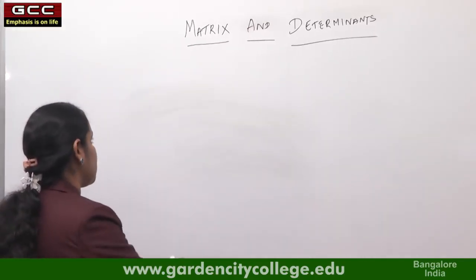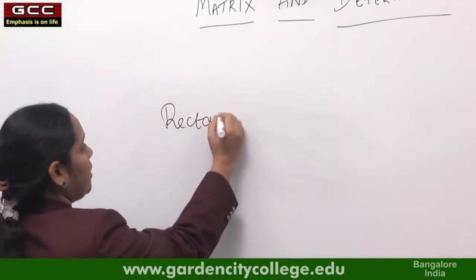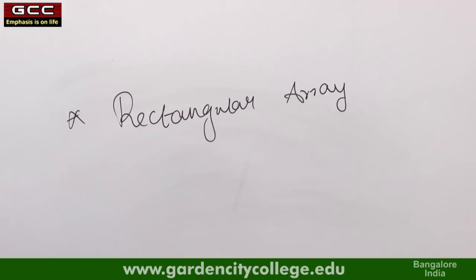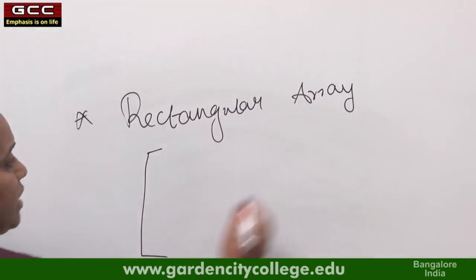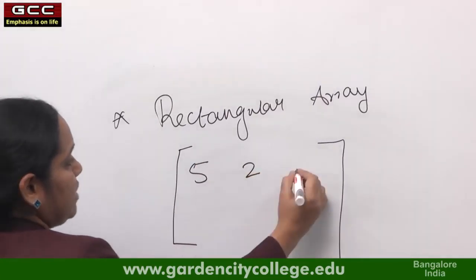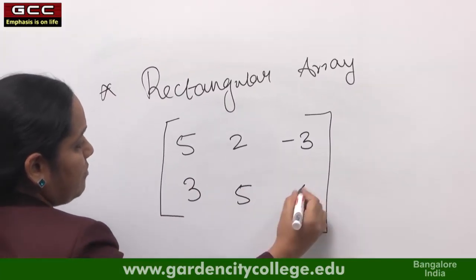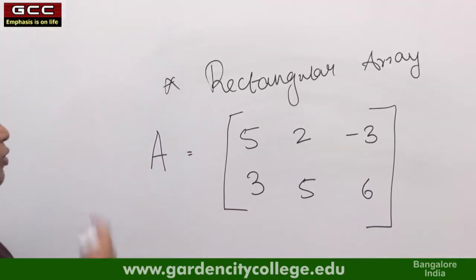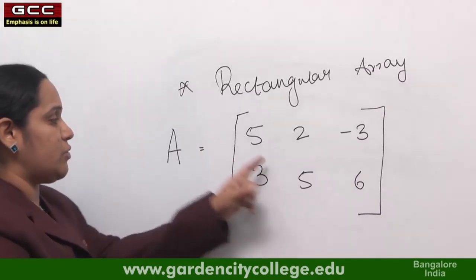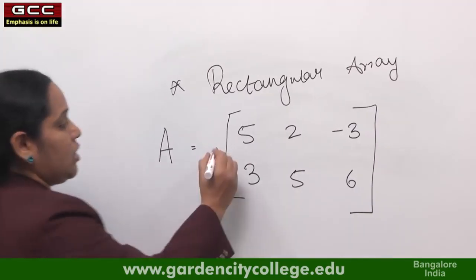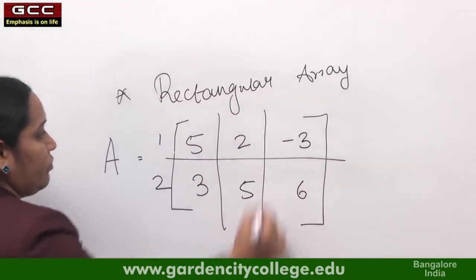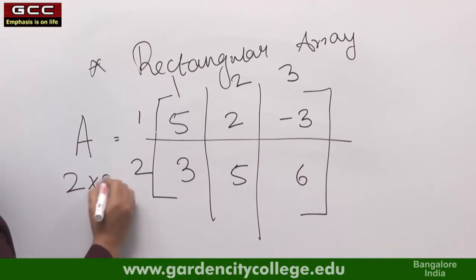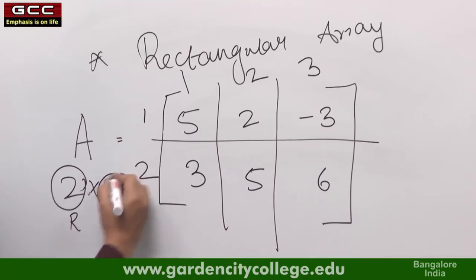A matrix is a rectangular array of numbers arranged in rows and columns. A matrix can be written in square brackets, for example A = [5, 2, -3; 3, 5, 6]. A matrix is always denoted with a capital letter. This matrix has 2 rows and 3 columns, so we call the order of the matrix 2 by 3, where 2 represents the number of rows and 3 represents the number of columns.